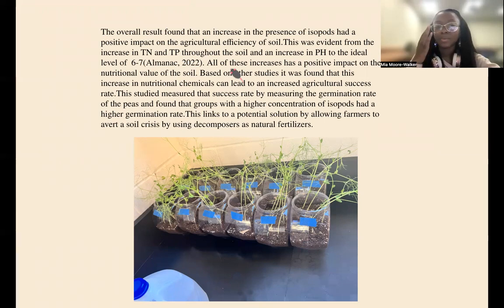And it was shown that the groups that had more isopods had a higher germination rate. Germination rate is just the sprouting of the overall peas. For instance, for the groups with high, they had more bowls where all five peas sprouted, whereas with control and low, there would only be two peas, maybe three peas that actually germinated. So we got to actually see the effects of increasing the concentration of decomposers.